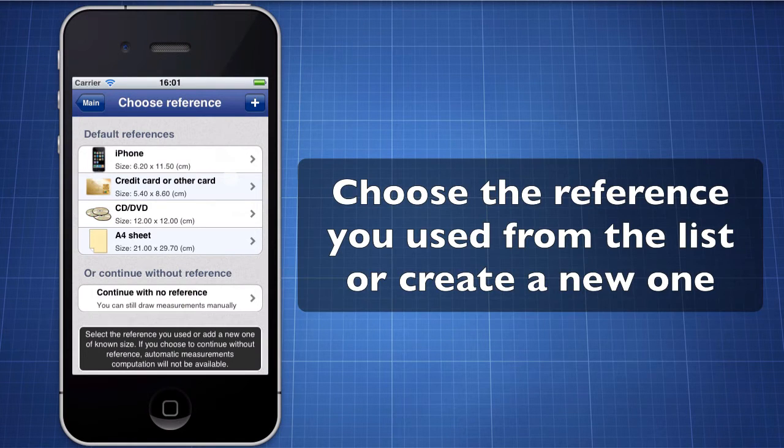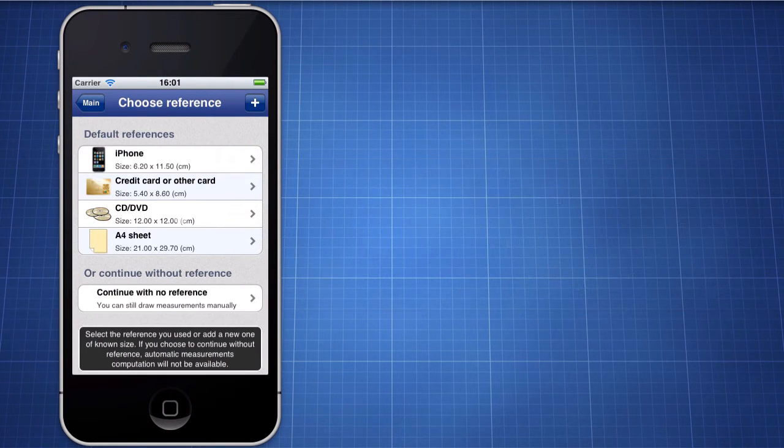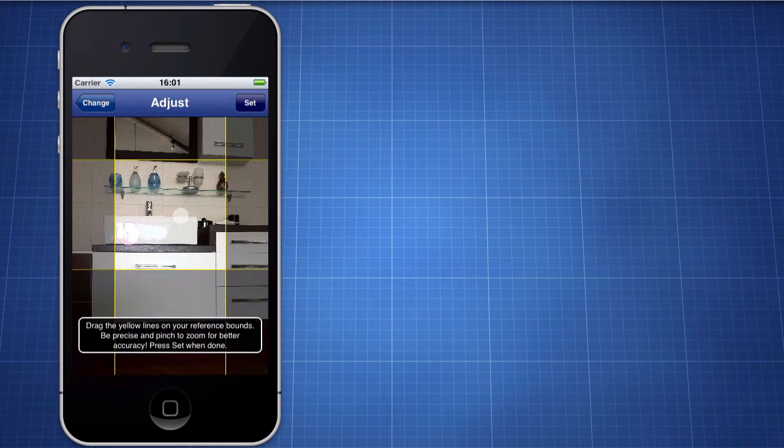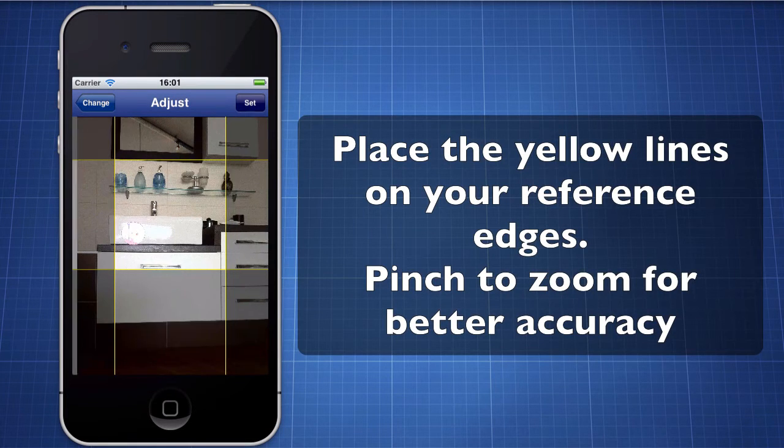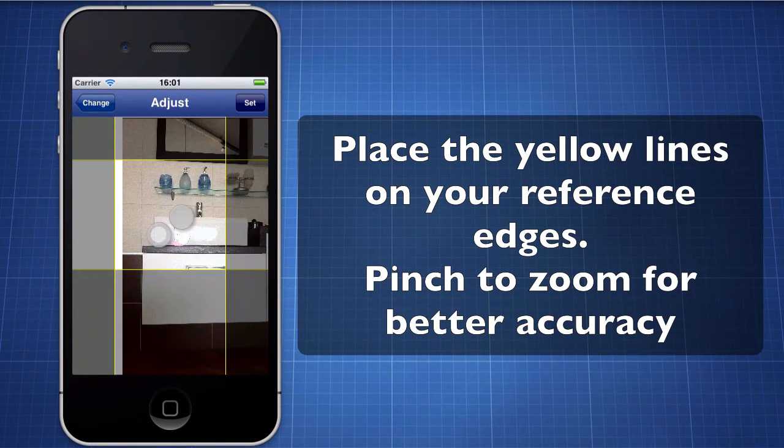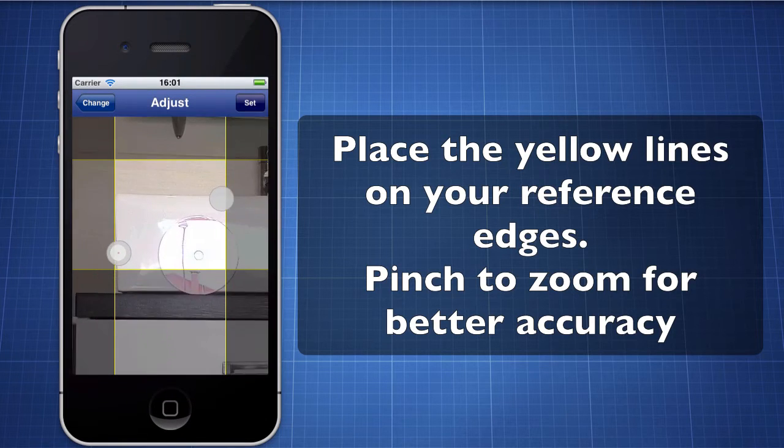Select the reference you used from the list or create a new one. Drag the yellow lines on the edges of the reference. Use two fingers to zoom in or rotate to get the best accuracy.